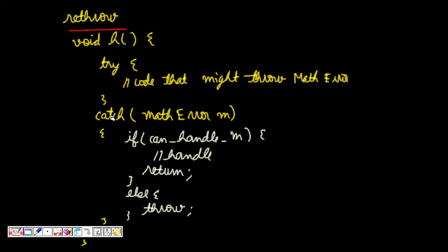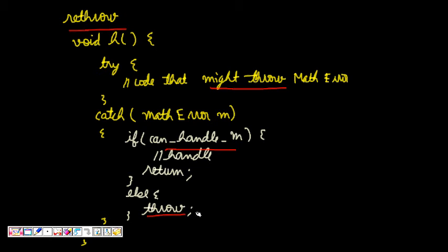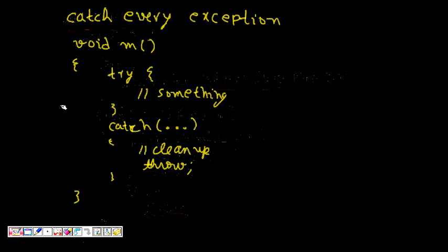There is another concept called rethrow. It means that even though you have a catch block, if you find you cannot handle that error, you can rethrow it to be caught at a higher level. You do this by writing throw with no object — just throw; — which rethrows the current exception for some other level to handle.